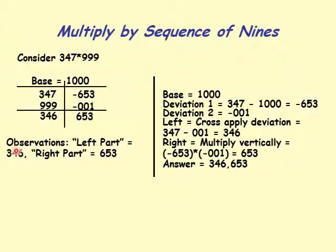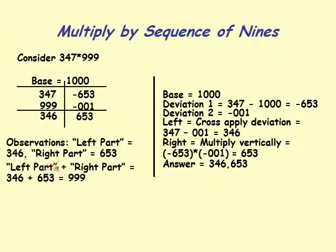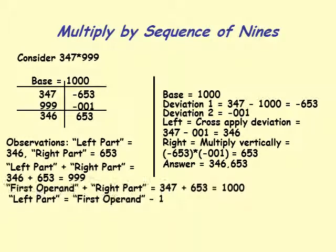Let's observe: left part is 346 and right part is 653. Adding them: 346 plus 653 equals 999, so the left and right parts are 9's complements of each other. Also, the first operand 347 plus 653 equals 1000, confirming that 653 is the 'all from 9 and last from 10' of 347.